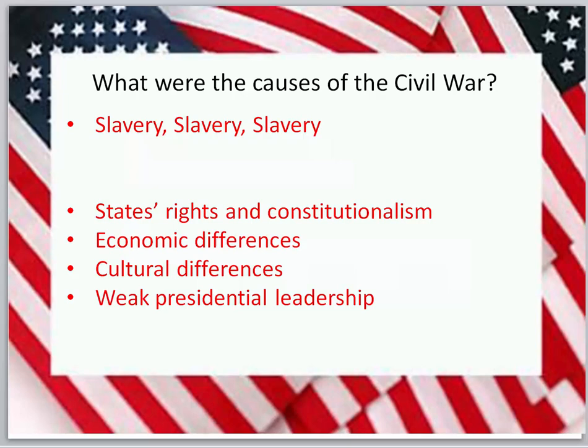There are cultural differences between the two. Some historians argue that the presidencies of number 14, Franklin Pierce, and number 15, James Buchanan, really didn't lend themselves to keeping the country united. But I want to emphasize that nothing in history is inevitable. Sometimes we want to think the Civil War was bound to happen — well, if we look at it that way, what's the purpose of studying history? It's often to learn from our mistakes. So let's not think that the Civil War could not have been avoided.